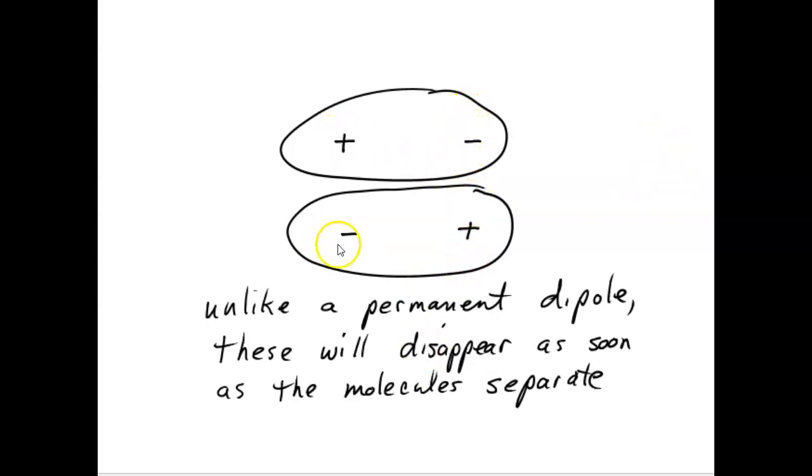So the opposites will attract and the two molecules will stick to each other. And the temporary dipoles will become momentarily permanent, as long as the molecules stay right next to each other. As soon as the molecules separate, though, these dipoles are going to disappear.